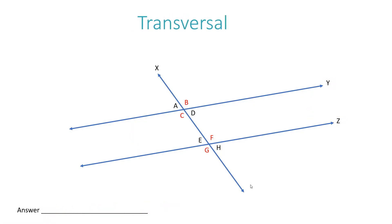Now let's take a look at a transversal. In this particular example, the transversal is line X — the line that intersects the two parallel lines. So in this case, the answer for what is the transversal in this scenario would be line X.